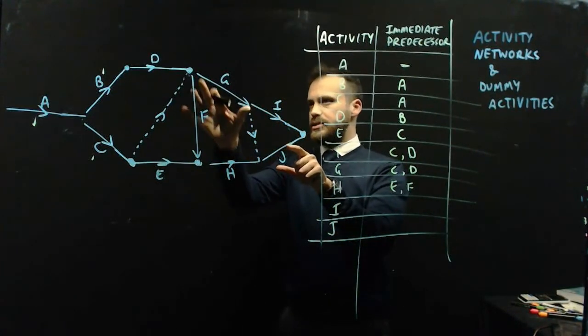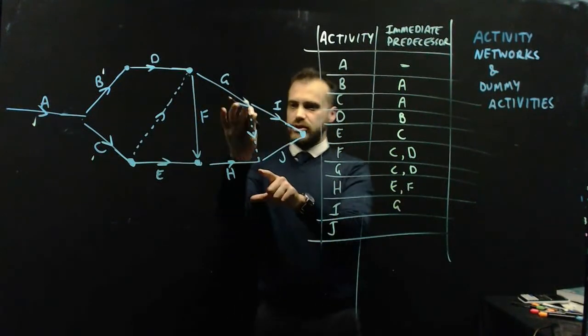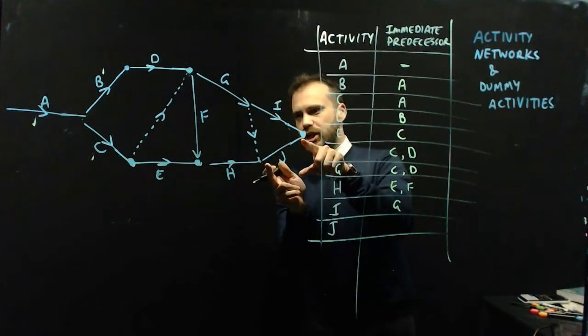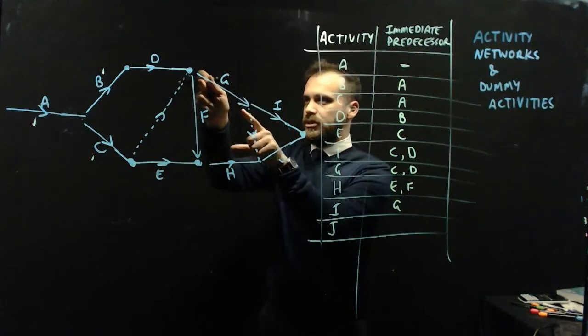I has an immediate predecessor just of G. And we have this dotted line here again leading to here.